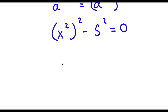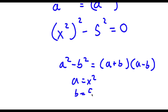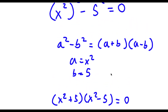Now if I have something in the form a squared minus b squared, this is equal to a plus b times a minus b. So in this case, a is equal to x squared and b is equal to 5. So I have x squared plus 5 times x squared minus 5 is equal to 0.